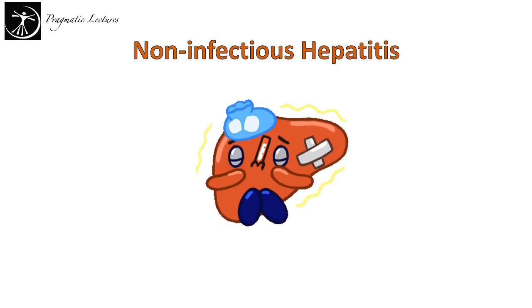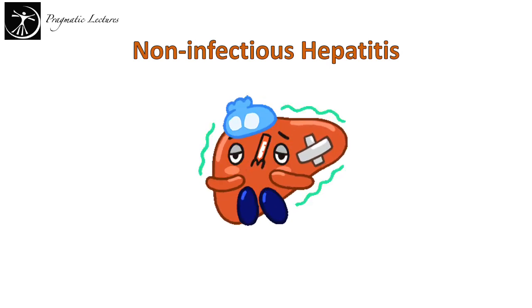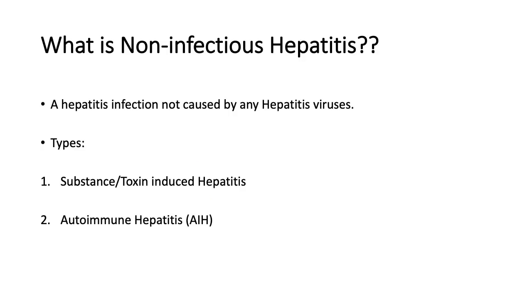Hello everybody. In this lecture we will be talking more in detail about non-infectious hepatitis. Non-infectious hepatitis is a condition that is not caused by any hepatitis viruses, and there are two different types of non-infectious hepatitis. The first one is called substance or toxin-induced hepatitis, while the second one is better known as autoimmune hepatitis, or AIH.